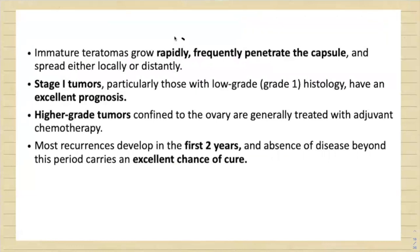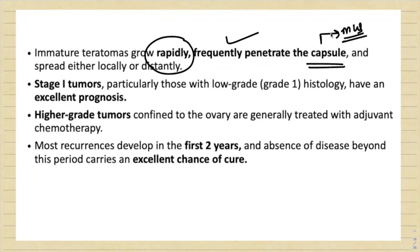Immature teratomas rapidly and frequently penetrate the capsule. Any stage one ovarian carcinoma has a good prognosis including immature teratomas. Higher grade tumors confined to the ovary are treated with adjuvant chemotherapy and respond well.